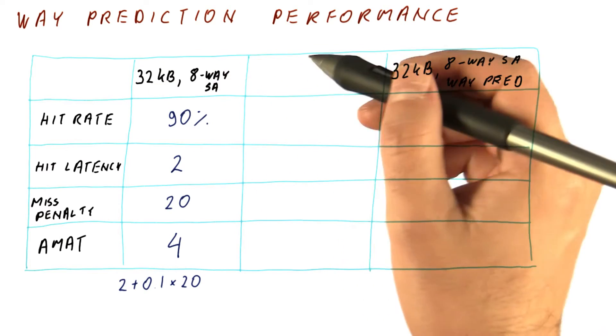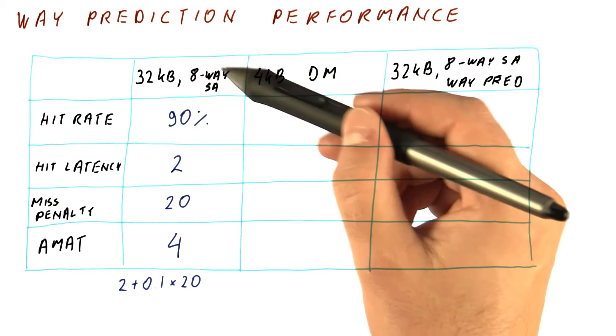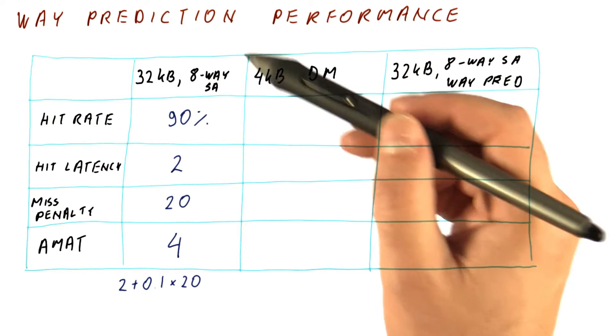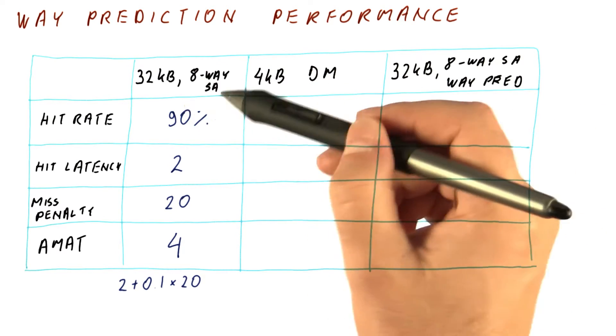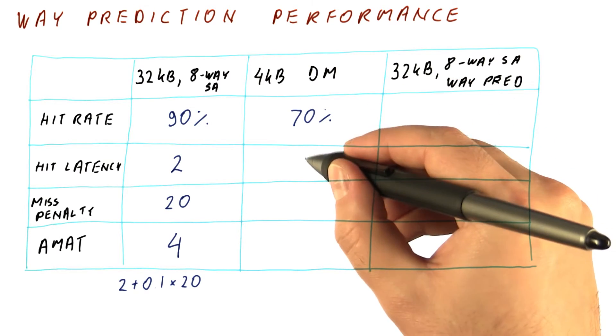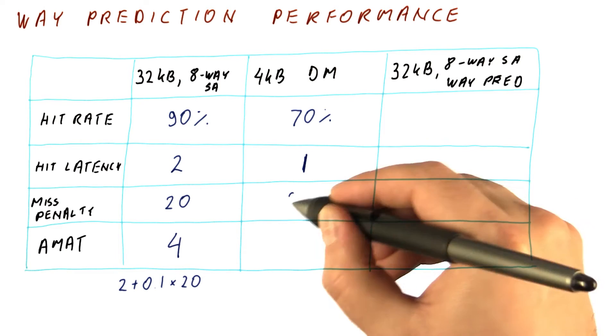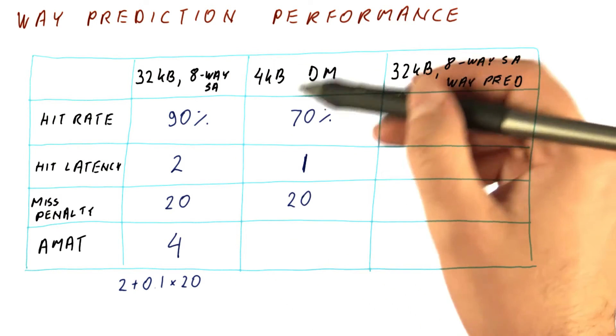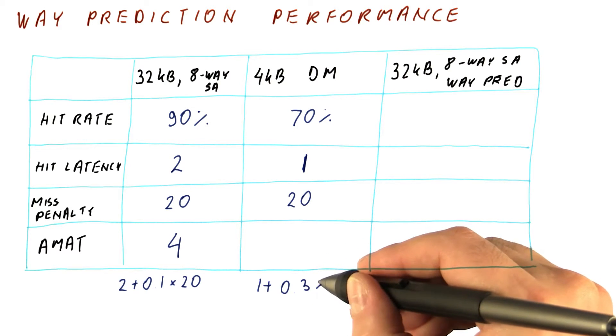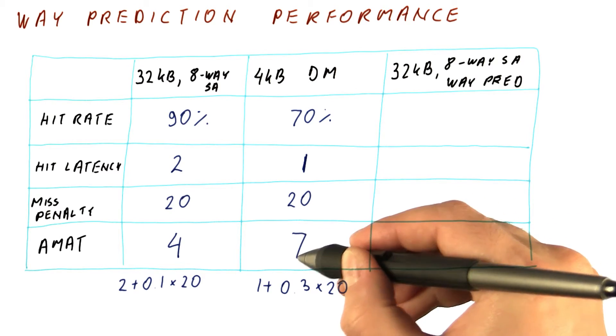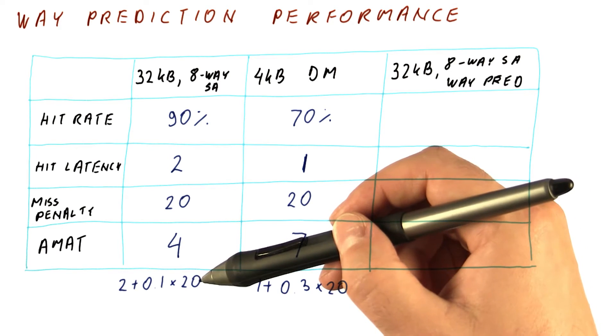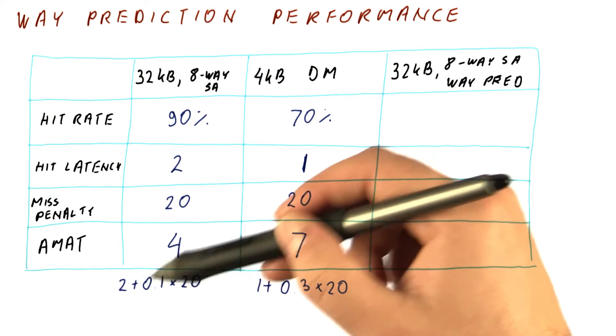We already said that way prediction behaves like accessing only one of the ways in the cache. With way prediction in an eight way set associative cache, we are really guessing which of the eight places is going to have the block. So effectively, with way prediction, our first attempt will be to a four kilobyte direct map subset of this cache. If we look at the normal four kilobyte direct map cache, that's going to have, for example, a 70% hit rate, but one cycle hit latency because it's faster. And the miss penalty will be the same. If we now try to get the AMAT for this basic direct map cache, we will have one plus 0.3, the miss rate, times 20. And this is going to be one plus six, so it gives us seven. So obviously, we are better off with the eight way set associative cache.